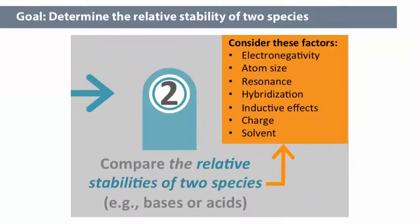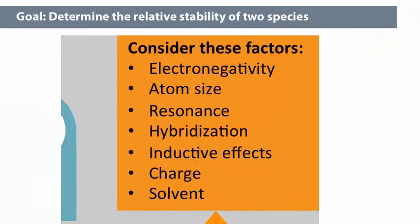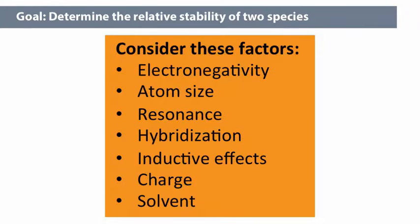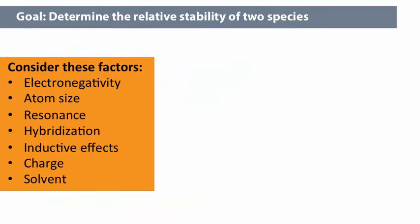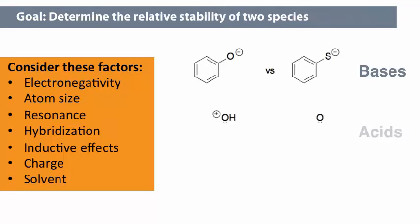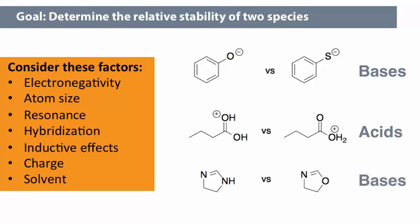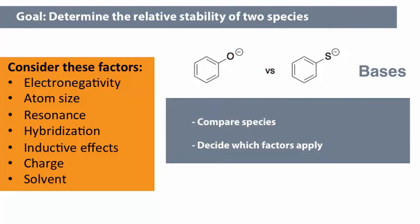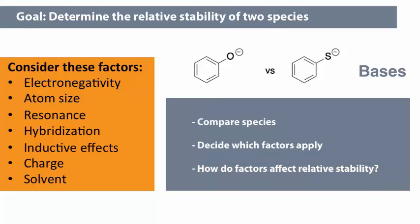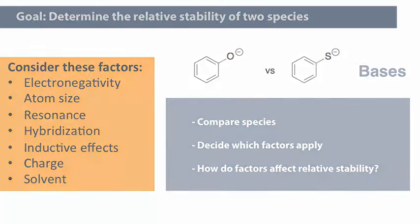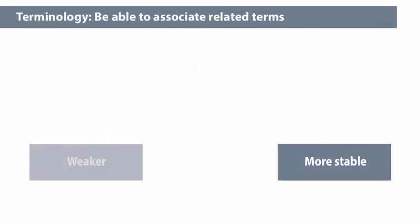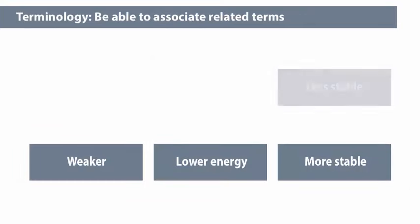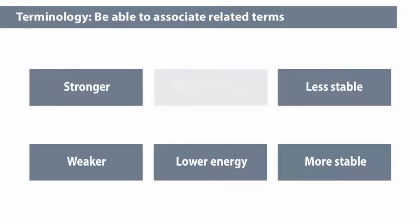To determine the relative stability of two or more species, we can use any one of the factors listed below. In this video, we are specifically going to be comparing the relative stability of bases by applying these factors, but these factors apply to any species — for example, to compare two different charged acids or two neutral bases. The general strategy is to compare the species, decide which factors apply, then determine how those factors affect the relative stability of the species. The more stable the species, the weaker or lower energy they are. The less stable a species, the stronger and higher energy it will be.